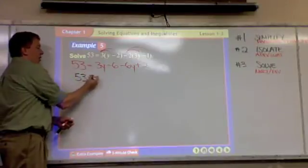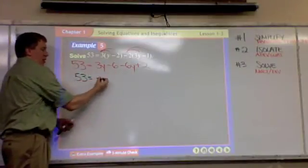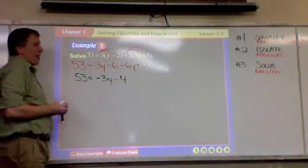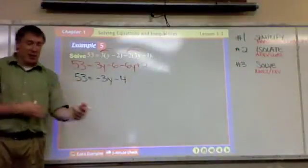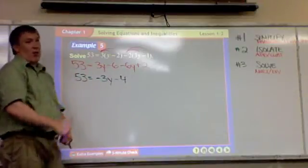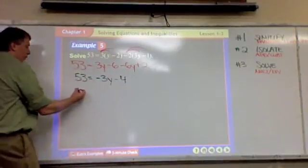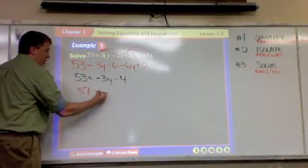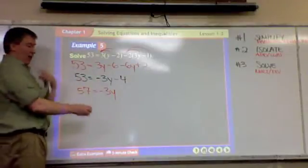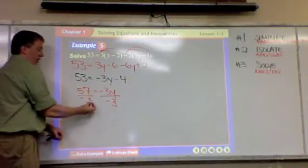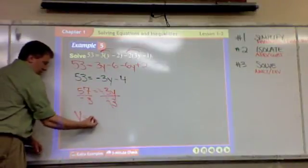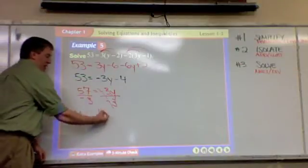So 53 equals 3y minus 6y, negative 3y. Negative 6 plus 2, minus 4. Now we're on to the next step which is isolate. That means I need to get the letter by itself. Here's the letter. What's tagging along with it? The minus 4. So I'm going to throw it over there, it's going to be a plus 4. 57 equals negative 3y.